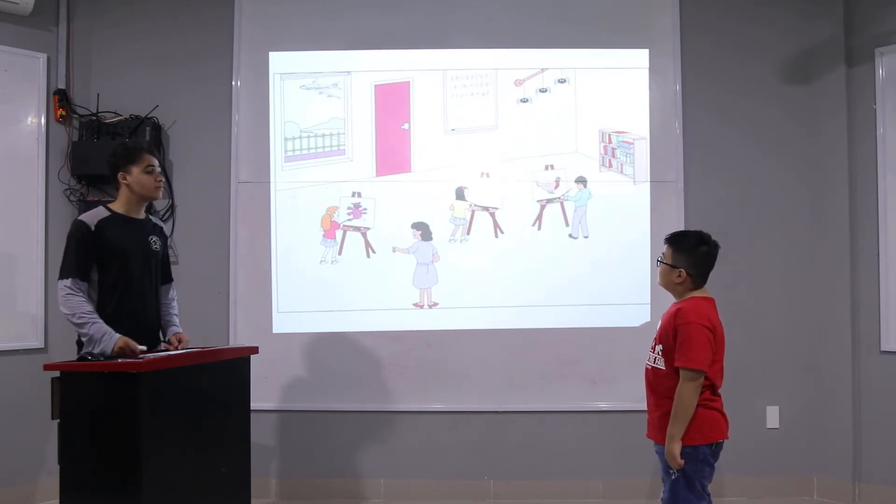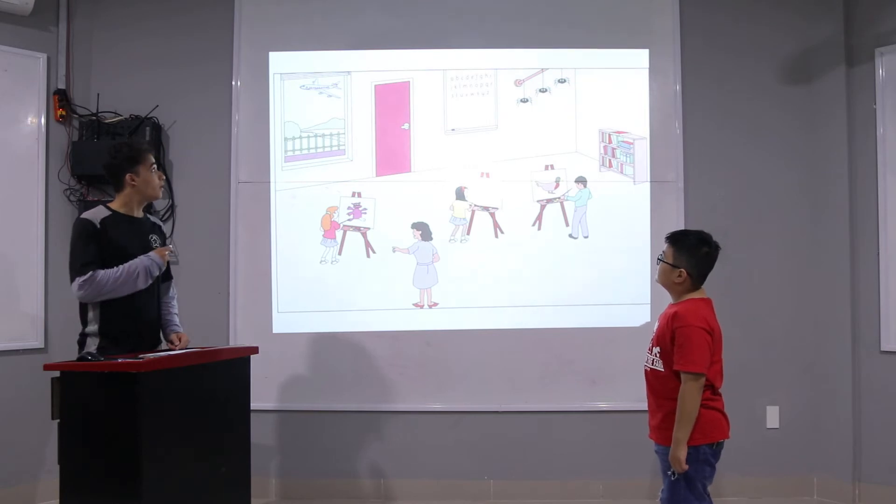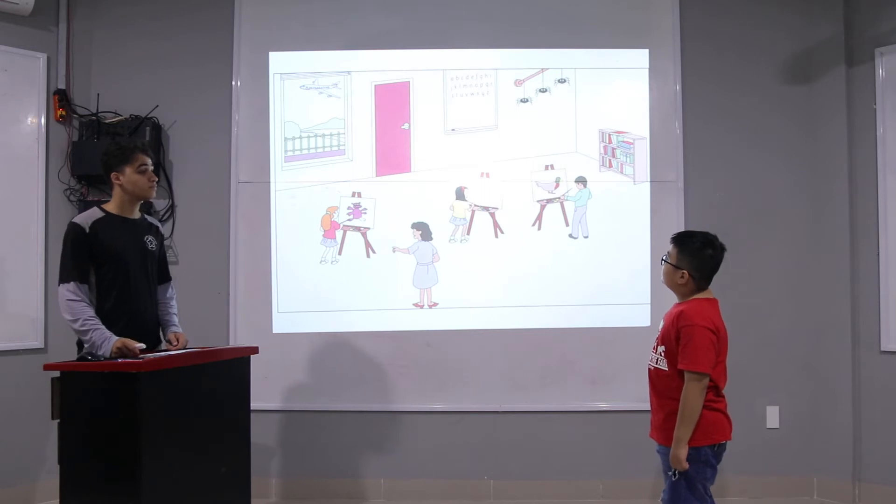How many people are there? There are four people. How's the weather? It's sunny. What's on the board? It's the alphabet.